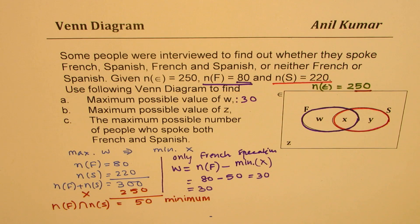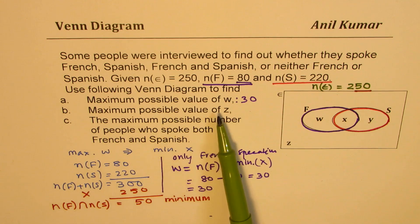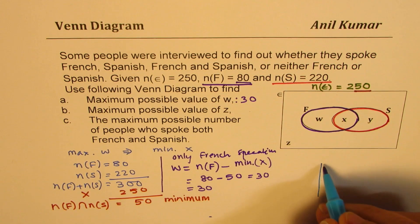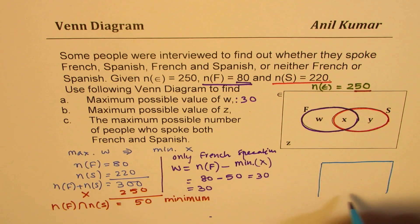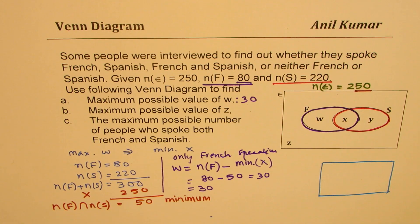Now let's look into the second part, which is maximum possible value of Z. How do we get maximum possible value of Z? Well, the only way to get that is if I have a situation where all those who speak French are also speaking Spanish. So kind of like this.